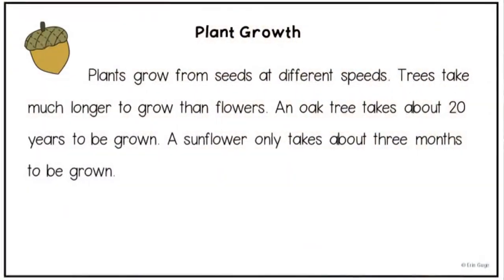Let's do this again with two more short stories. Here's the first one — follow along as I read. Plant Growth. Plants grow from seeds at different speeds. Trees take much longer to grow than flowers. An oak tree takes about 20 years to be grown. A sunflower only takes about 3 months to be grown.